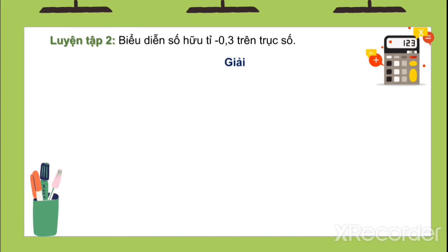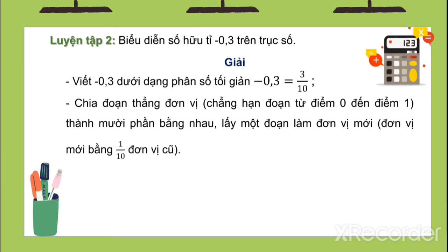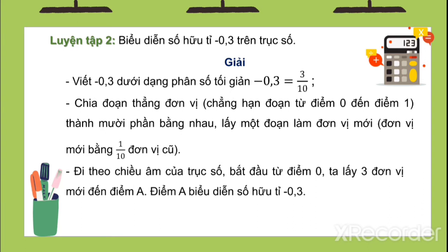Luyện tập 2: Biểu diễn số hữu tỉ âm 0.3 trên trục số. Ta viết âm 0.3 dưới dạng phân số tối giản là âm 3 phần 10. Chia đoạn thẳng đơn vị, chẳng hạn từ điểm 0 đến điểm 1, thành 10 phần bằng nhau. Ta lấy một đoạn làm đơn vị mới, đơn vị mới bằng 1 phần 10 đơn vị cũ. Đi theo chiều âm của trục số, bắt đầu từ điểm 0, ta lấy 3 đơn vị mới đến điểm A. Điểm A biểu diễn số hữu tỉ âm 0.3.